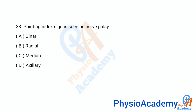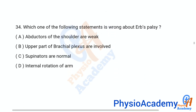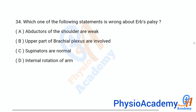Question number 33: Pointing index sign is seen in which nerve palsy? Option A ulnar, option B radial, option C median, option D axillary. The correct answer is option C, median.